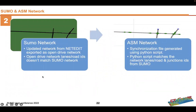For the SUMO network, we updated the network using NetEdit and exported it as an OpenDRIVE file, because DSpace requires an OpenDRIVE file to import the network. The problem was that the OpenDRIVE network lane and road IDs don't match the SUMO network. So we created a synchronization file using a Python script that essentially matches the network lanes, roads, and junction IDs from SUMO. This was necessary because we needed to use the TraCI moveToXY command, which requires edge IDs and lane IDs.